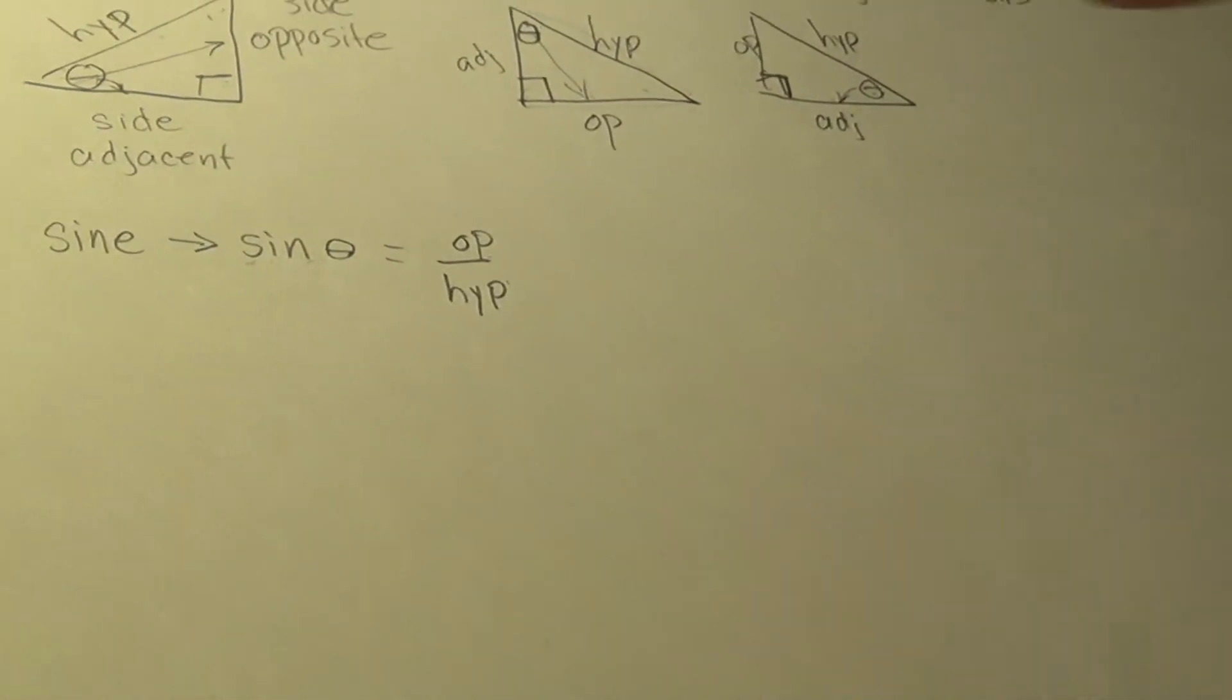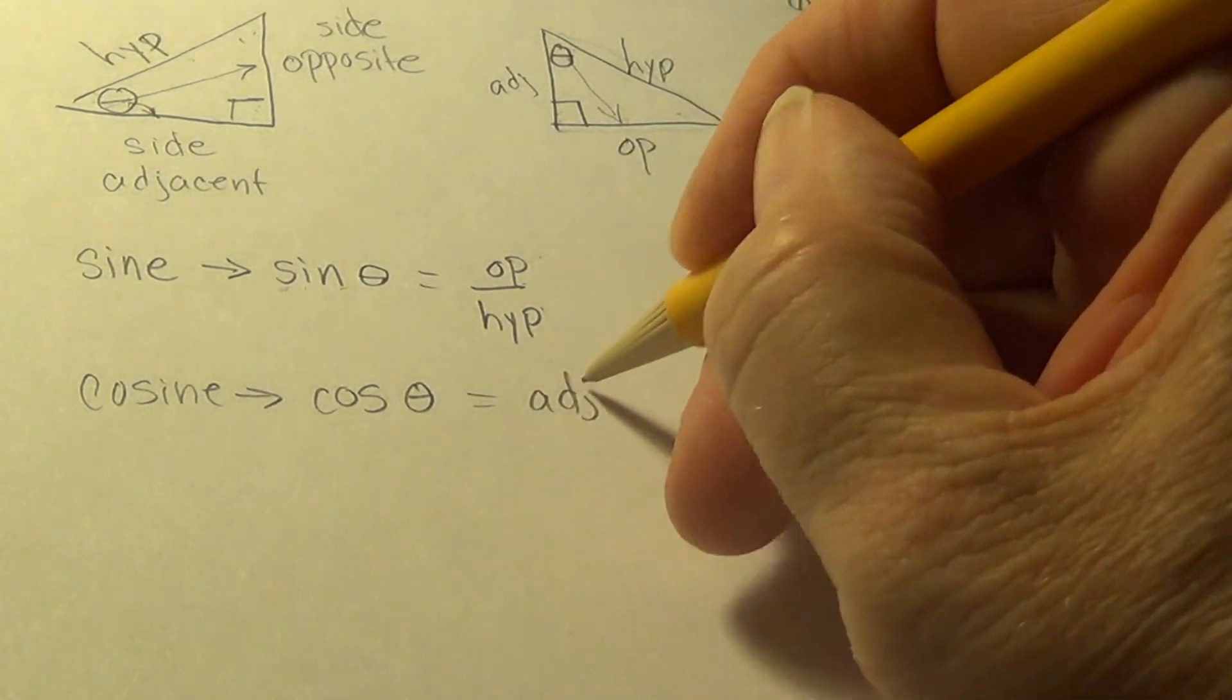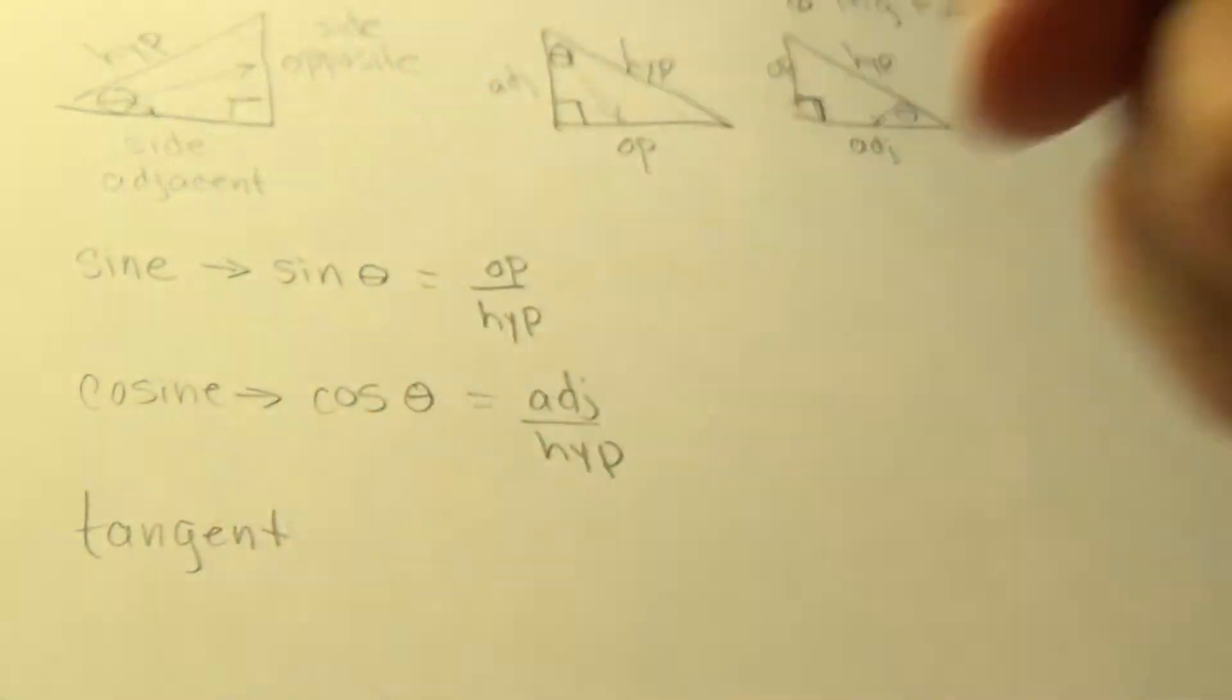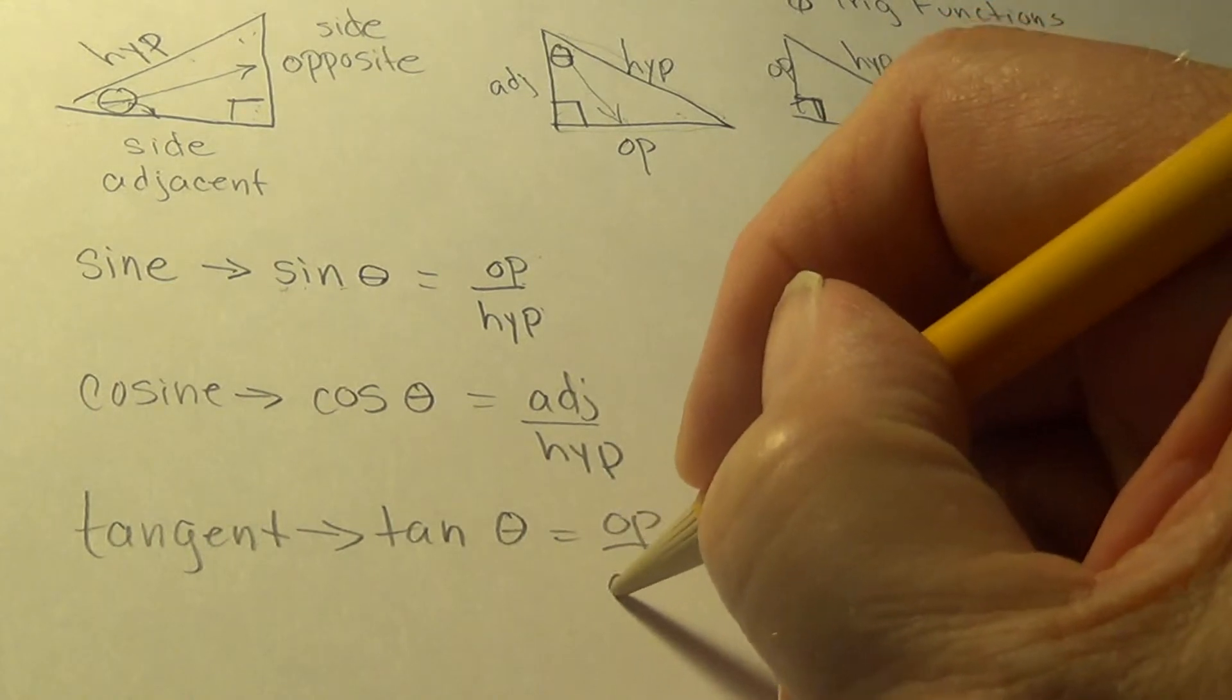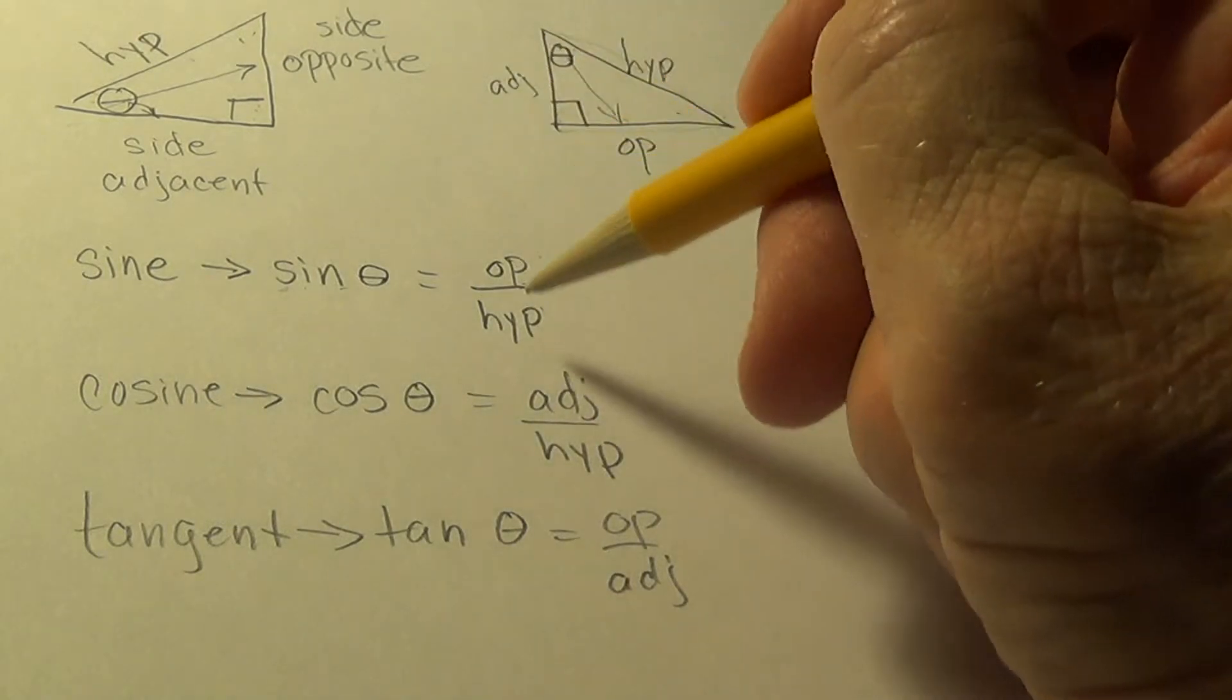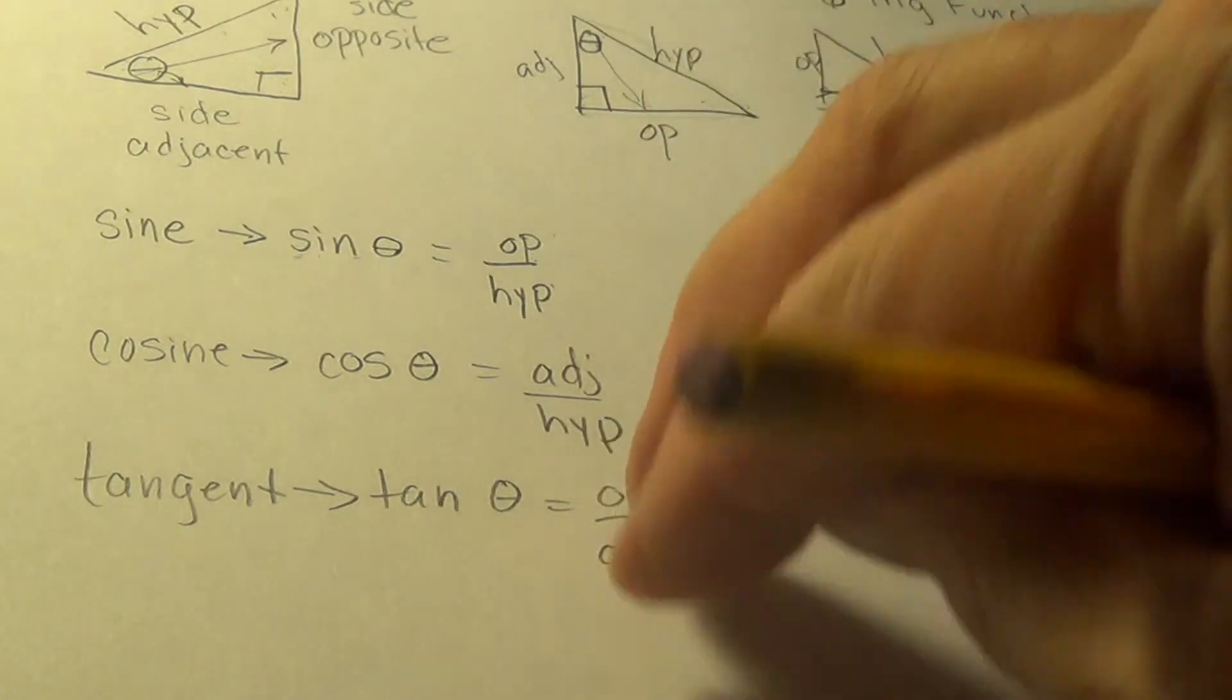The next one is cosine and its abbreviation is C-O-S, pronounced cosine, never cos. Cosine is adjacent side divided by hypotenuse. Tangent is the next one. Its abbreviation is tan, T-A-N, tangent of theta, and it is opposite over adjacent. You can see that all of these trig functions are ratios. Now, that's three and I promised six. I will not disappoint.